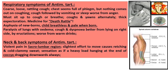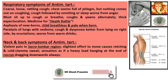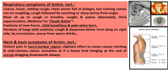Respiratory symptoms of Antim Tart: coarse, loose, rattling cough. Chest seems full of phlegm but nothing comes out on coughing. Cough followed by vomiting. Worse from anger. Must sit up to cough or breathe. Coughs and yawns alternately. Thick expectoration. Medicine for death rattle — the rattling of phlegm within the chest occurring before death. Also asphyxia of newborns: child breathless and pale when born. Paralysis of lungs with edema. Cough and dyspnea better from lying on right side and eructation. Worse from warm drinks.